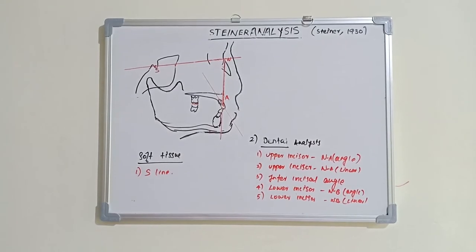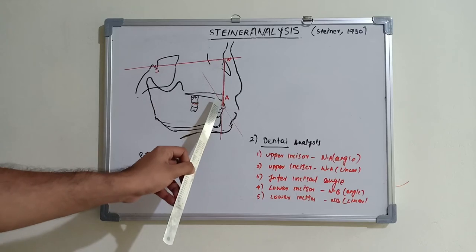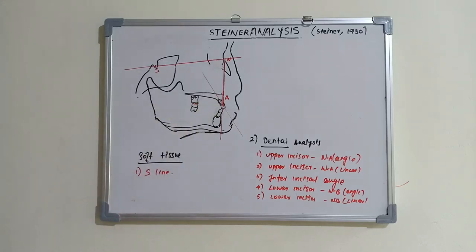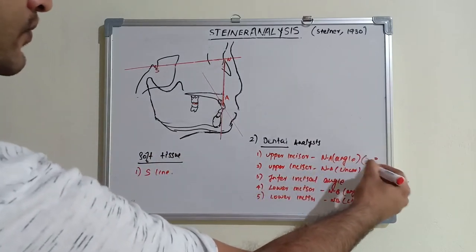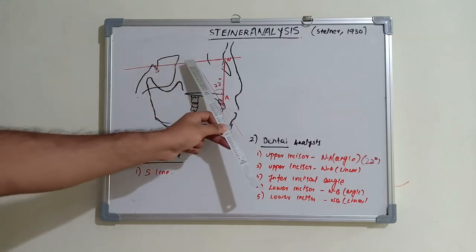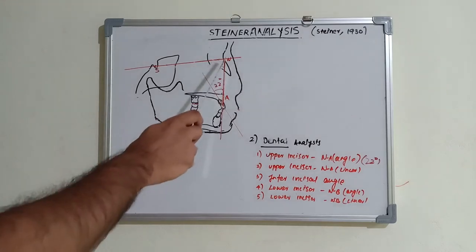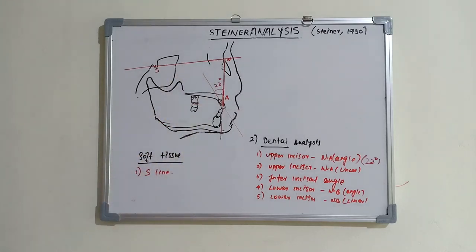Now for the dental analysis. The first parameter is the upper incisor to NA angle - this is the angle formed between the NA line (nasion to point A) and the long axis of the upper incisor. The normal value is 22 degrees. This angle indicates the relative inclination of the upper incisor and will be increased in Class II Division 1.